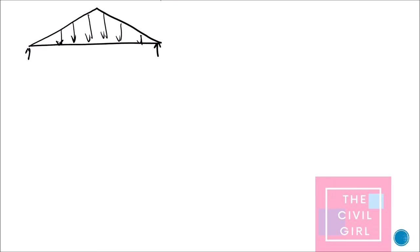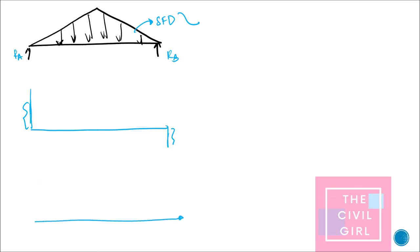Next I have a UVL on a simply supported beam. These intensities are equal to my RA and RB values. For a simply supported beam, shear force will always be present at the ends whereas bending moment will always be zero at the ends. Given these intensities, I will have a parabola — that is a curvilinear variation. The bending moment diagram is also going to be a curve.